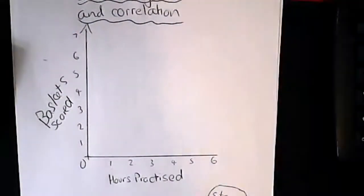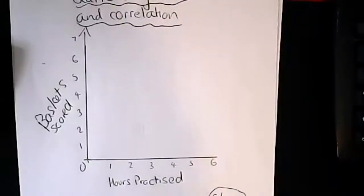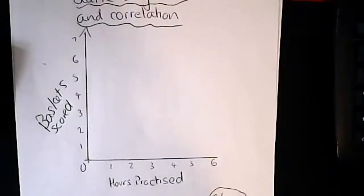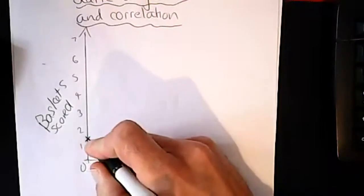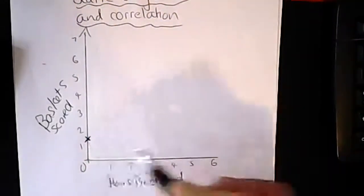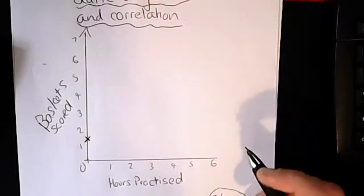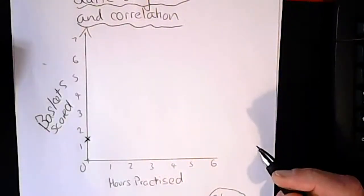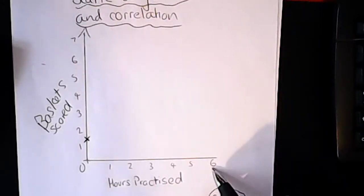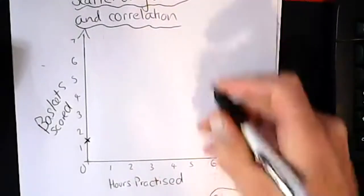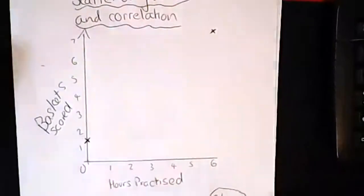The first player decided to mess around, eat toast at break time, hang around with his mates at lunch time - he's hardly practiced at all. He did get one and a half baskets. Another guy practises every break and every lunch time - six hours of practice - and when he had his test he scored seven baskets. So plotting this: six hours practice, seven baskets.